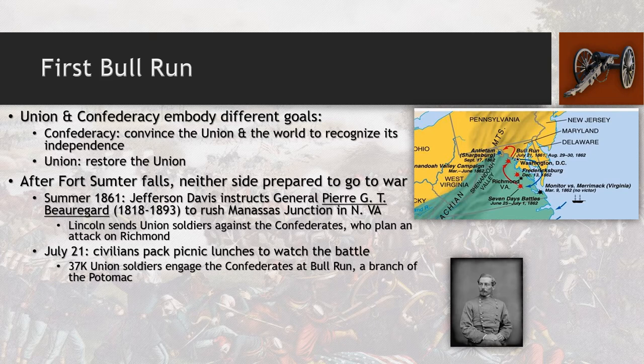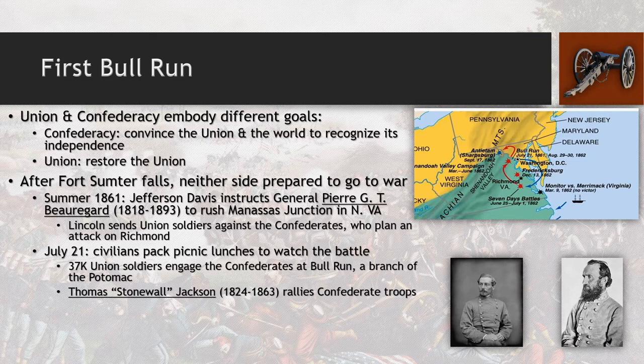37,000 Union soldiers fight the Confederates at Bull Run, which is a branch of the Potomac River. Stonewall Jackson rallies the Confederate troops and the Confederates end up winning the battle. Many civilians who came out to watch are caught in the crossfire — innocent people are shot and killed, with pie filling still in their mouths and picnic blankets torn to shreds scattered everywhere. It's a very grisly scene.